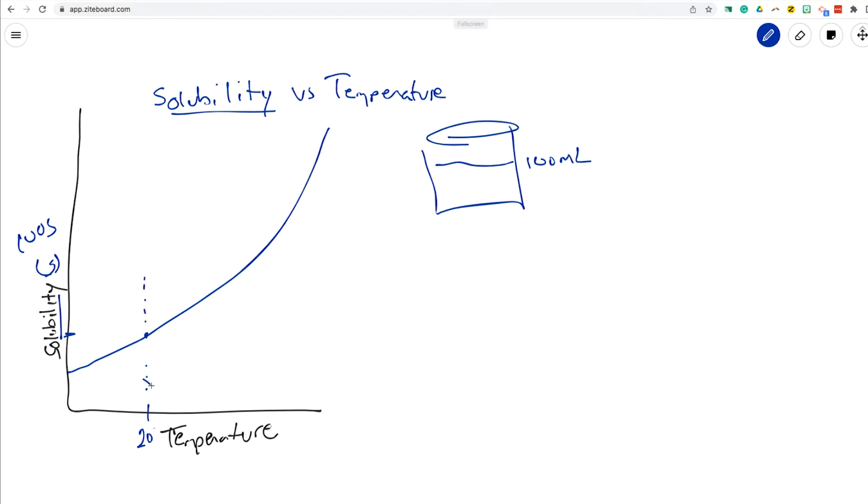And by the way, if you're below this line, we call that unsaturated solution, right? Because you have less than the maximum.